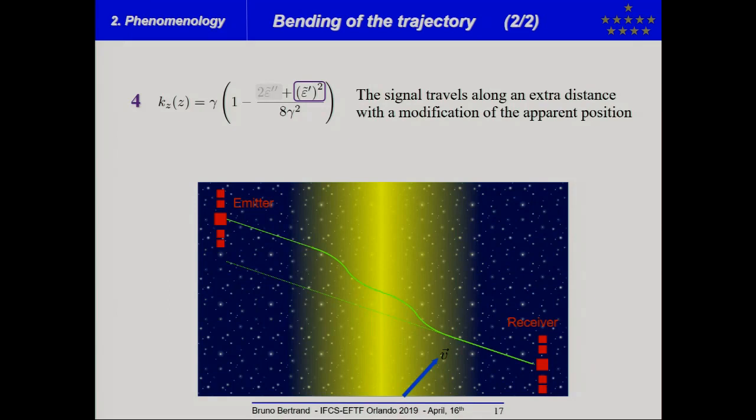You will have a fourth effect on the signal propagation related to the bending of the trajectory with, in that case, also a modification of the apparent position of the emitter versus the receiver.